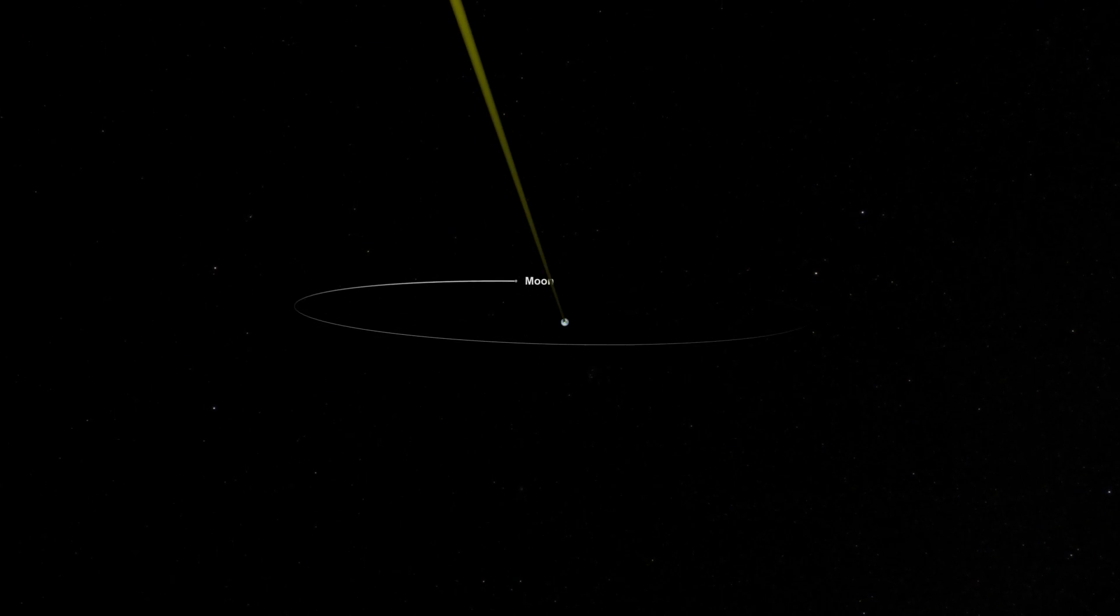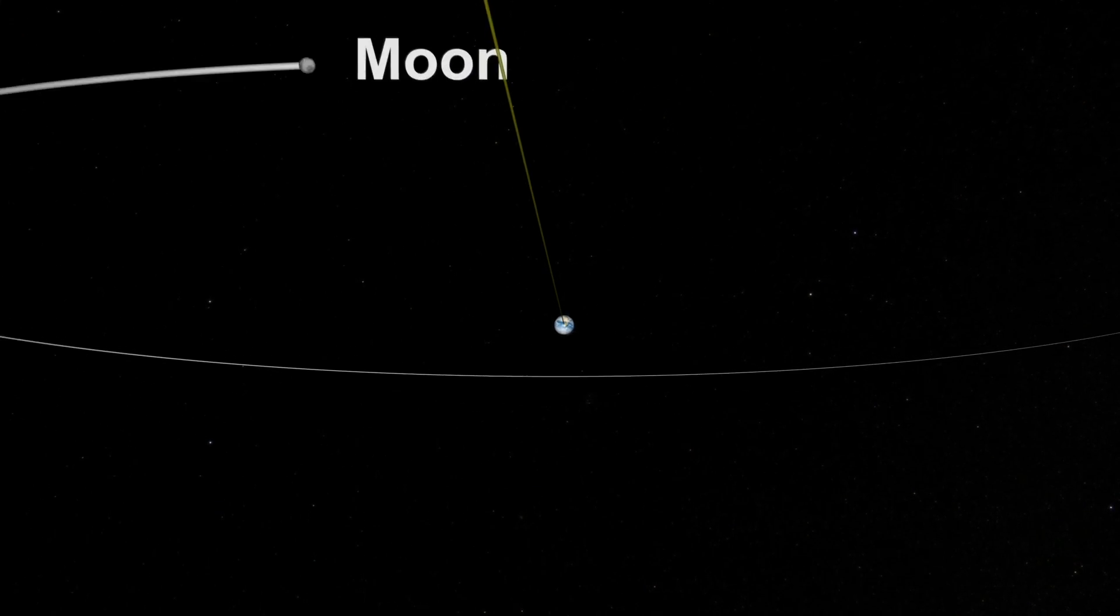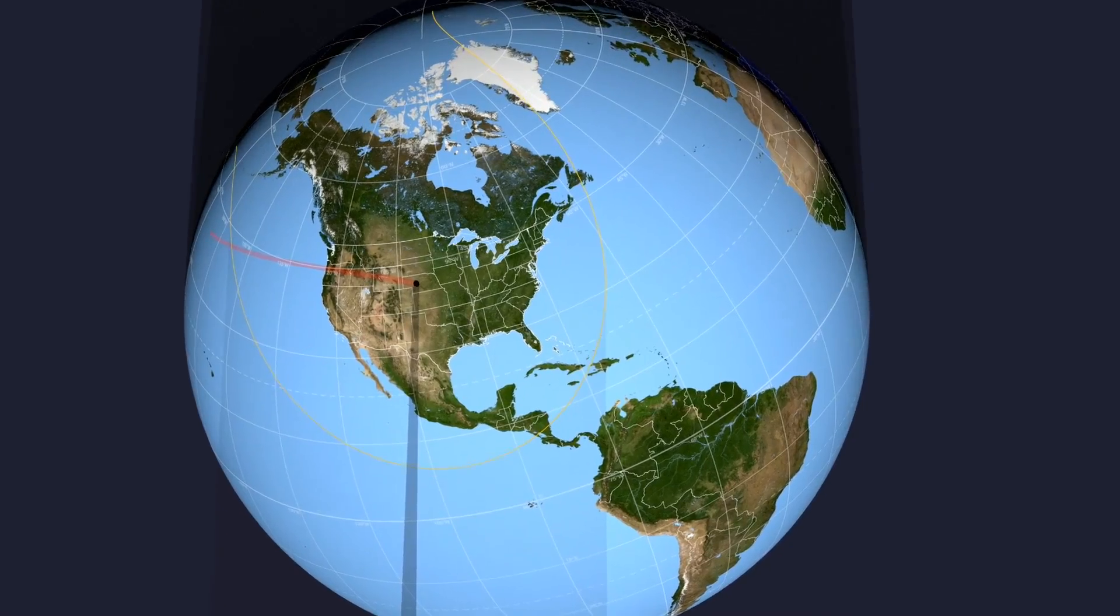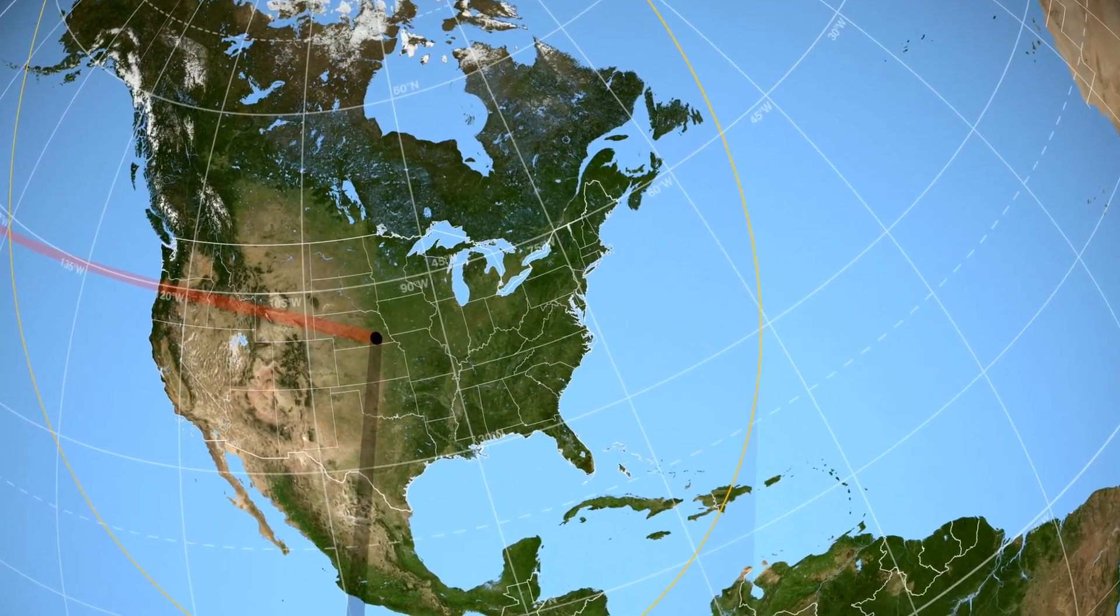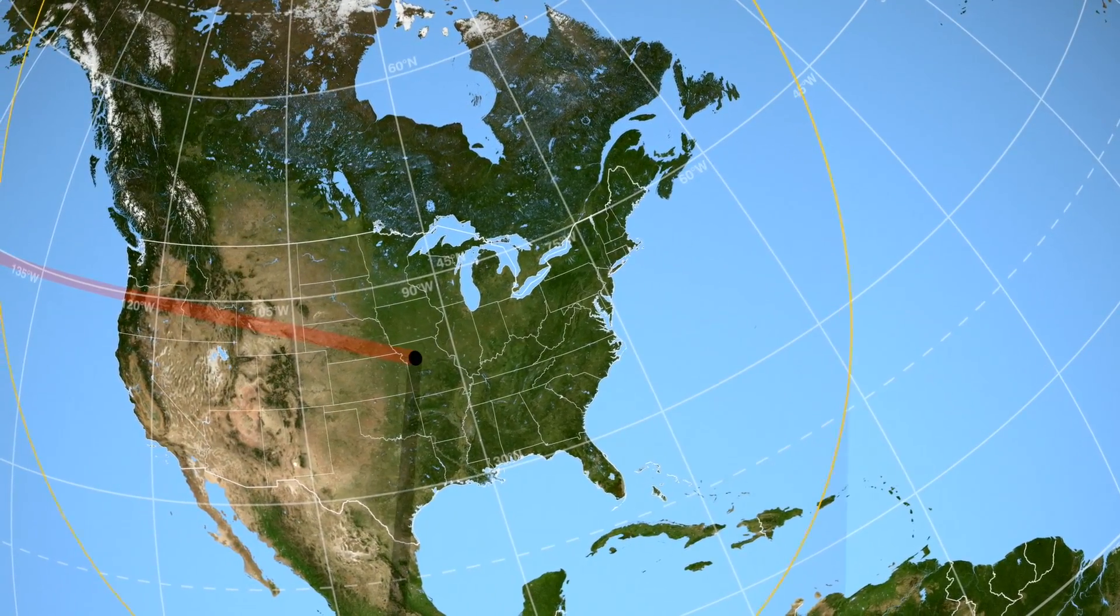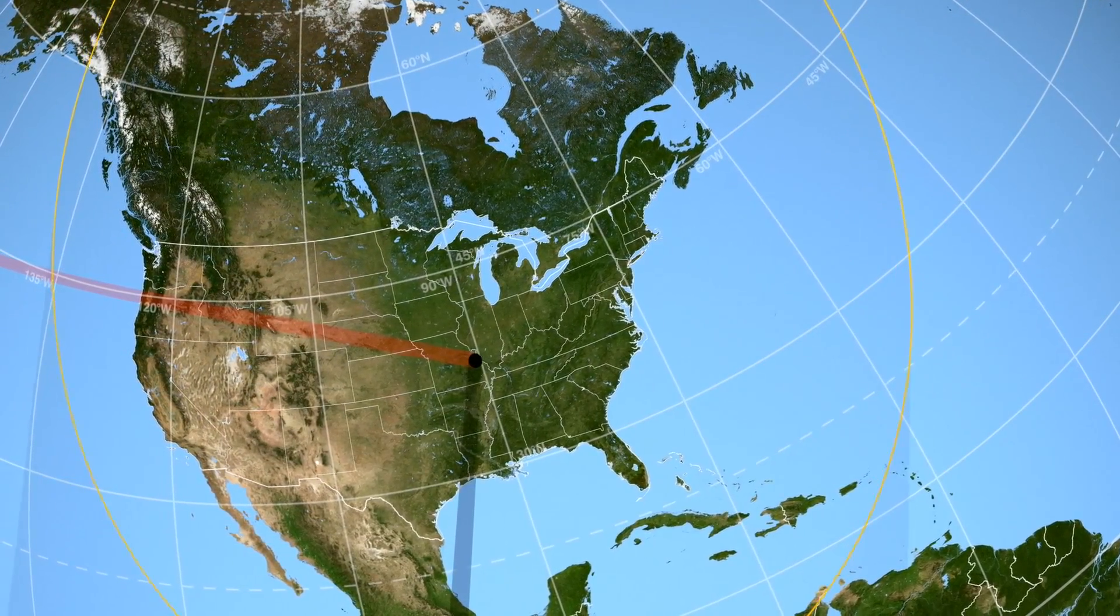Looking back at Earth from a million miles away, the Deep Space Climate Observatory will watch the August total solar eclipse in real time, giving scientists a unique opportunity to study our solar-powered planet.